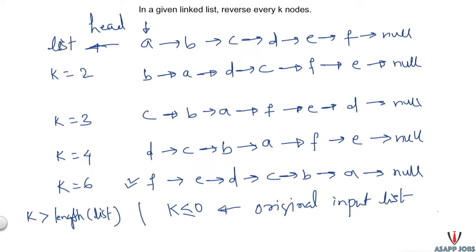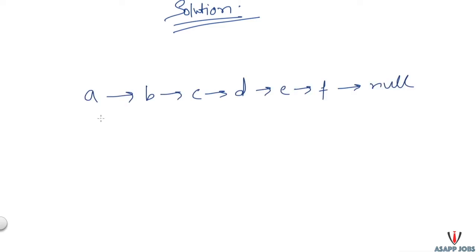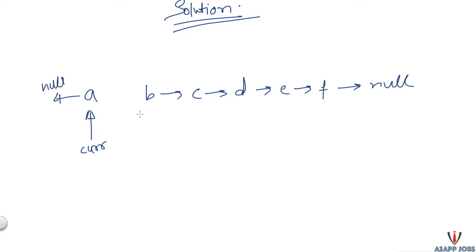Now let's think about the solution. From the question it's clear we need to reverse chunks of the linked list. First, let's understand how to reverse any linked list. If we use a single current pointer and try to point A's next to null, we realize we've disconnected from the remaining linked list. Solving the problem with a single pointer is not going to work.